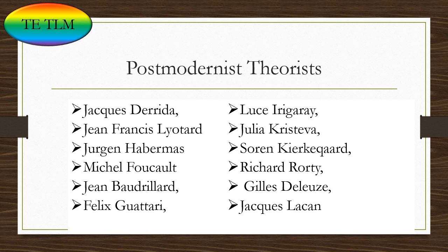Another theorist is Jürgen Habermas, who talked about Enlightenment, faith, and rationality. Other important theorists include Michel Foucault, Jean Baudrillard, Félix Guattari, Gilles Deleuze, Jacques Lacan, Julia Kristeva, and Richard Rorty. These postmodern theorists focused on ideology in the maintenance of economic and political power. Postmodernists are generally skeptical of explanations which claim to be valid for all groups, cultures, traditions, or races, and describe truth as relative.